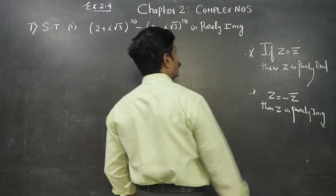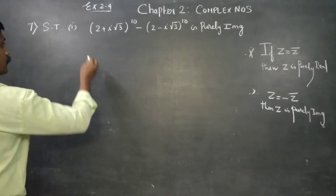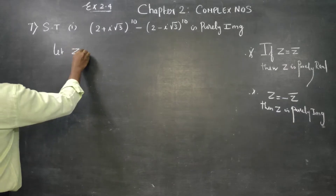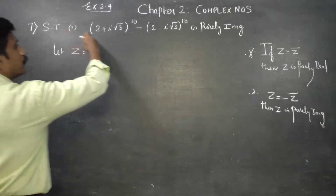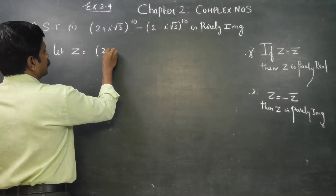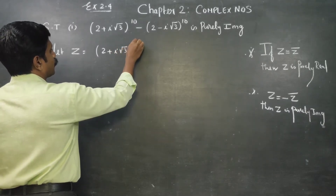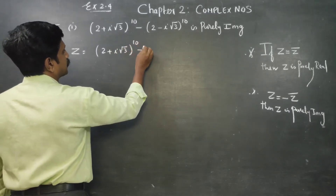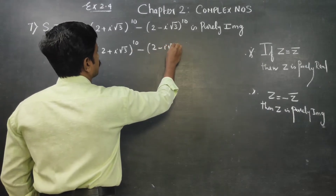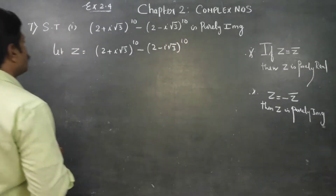In the complex number problem, we use the complex number Z. The expression is: (2 + i√3)^10 minus (2 - i√3)^10. This is our expression to work with.